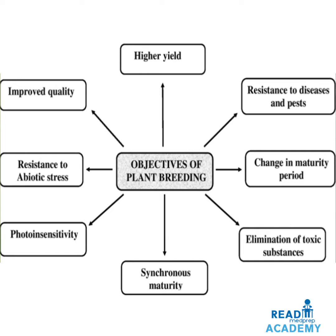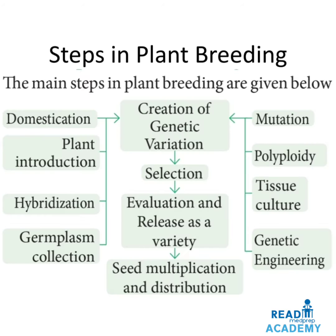The objectives include higher yield, resistance to disease and pests, change in maturity period, elimination of toxic substances, synchronous maturity, photoinsensitivity, resistance to abiotic stress and improved quality. What are the steps in plant breeding?